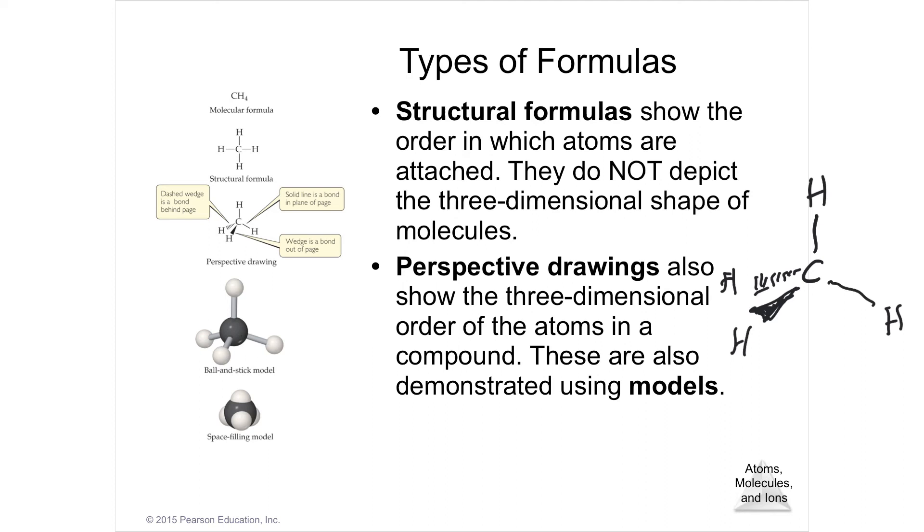The other ones are using models. Now this is a computer drawing of a model. But if you were to use a plastic model, I've got a box full of plastic models. They're balls and sticks, and it's showing you angles and things like that. But one would represent the carbon, that central atom, and then the four hydrogens that would come off of it.